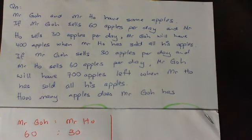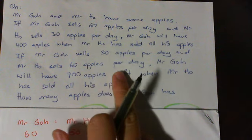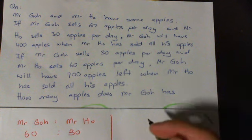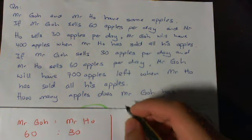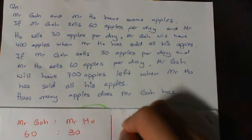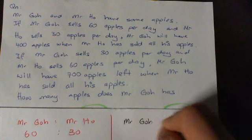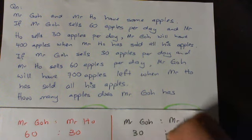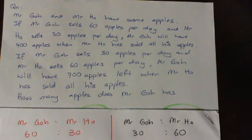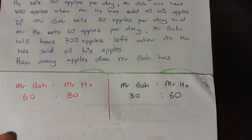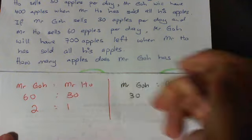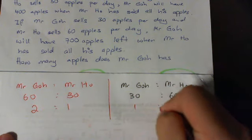Second situation: if Mr. Go sells 30 apples per day and Mr. Ho sells 60 apples per day, Mr. Go will have 700 apples left when Mr. Ho sells all his apples. So in the second situation, Mr. Go sells 30 per day and Mr. Ho sells 60 per day. I can simplify the ratios — 2 is to 1, and 1 is to 2.